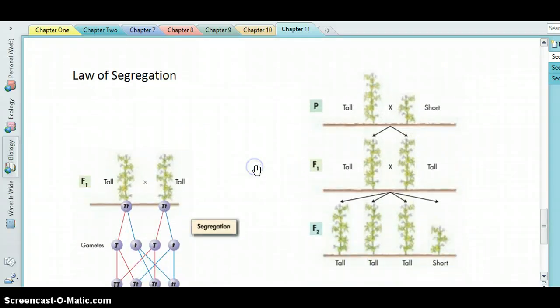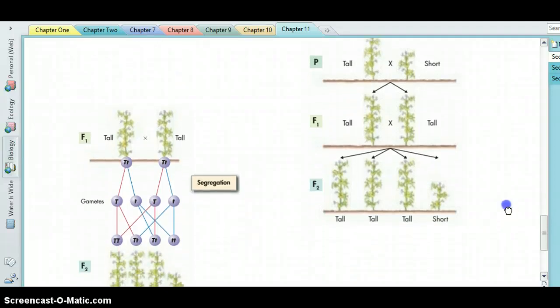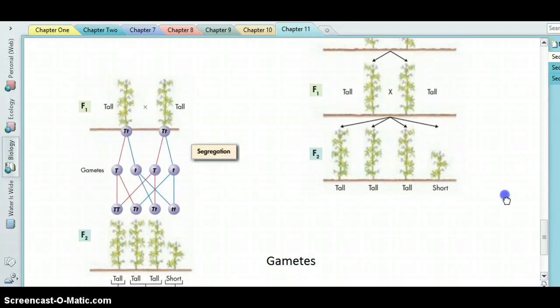All right, so we also discovered what we call the law of segregation. And so what is it? When we look at, let's look here on the left, these two individuals, they're both tall plants. But notice they're heterozygotes. They're big T, little t.